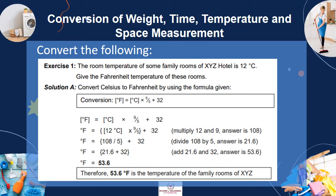Exercise 1: The room temperature of some family rooms of XYZ Hotel is 12 degrees Celsius. Give the Fahrenheit temperature of these rooms. Solution: Convert Celsius to Fahrenheit using the given formula. Therefore, 53.6 degrees Fahrenheit is the temperature of the family rooms of XYZ Hotel.